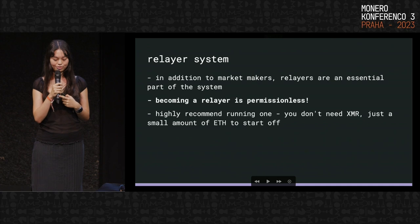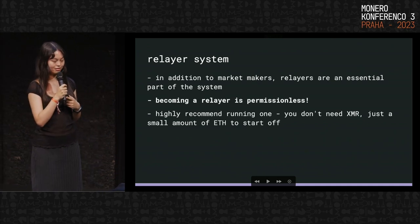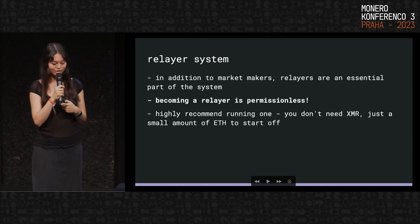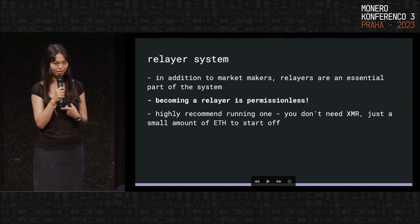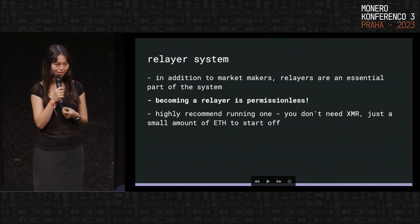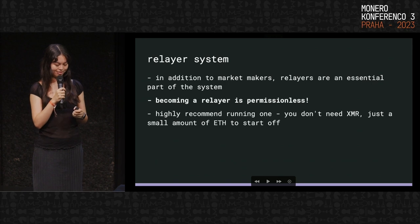Relayers are really essential to the system, otherwise it becomes a bit of a pain to use. Right now it's permissionless to join. I'd highly recommend running one if you want, because you don't need any Monero — you only need a really small amount of ETH just to pay for gas to start off, and you get a little bit of funds. So I would recommend running one.